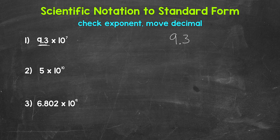For number 1, the exponent is 7. That tells us that we need to move the decimal 7 places. But which way — left or right? When we have a positive exponent, we know that we are working with a large number. When we have a negative exponent, we know that we are working with a small number. We have a positive exponent here, so we have a large number. That means we are going to move the decimal to the right. We are multiplying 9.3 by 10 to the 7th power, so 9.3 is going to be increasing in value.